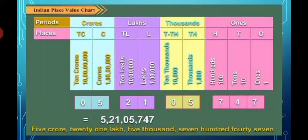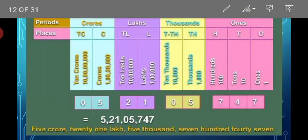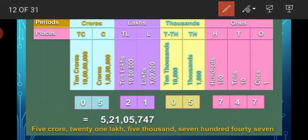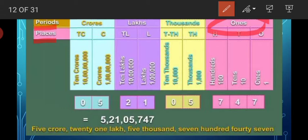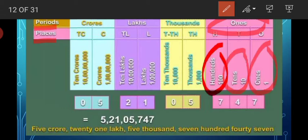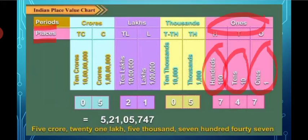Now we come to the Indian place value chart. It consists of periods and places. There are four periods: ones, thousands, lakhs, and crores. Let's start the discussion from the ones period. It consists of three places: ones, tens, and hundreds.